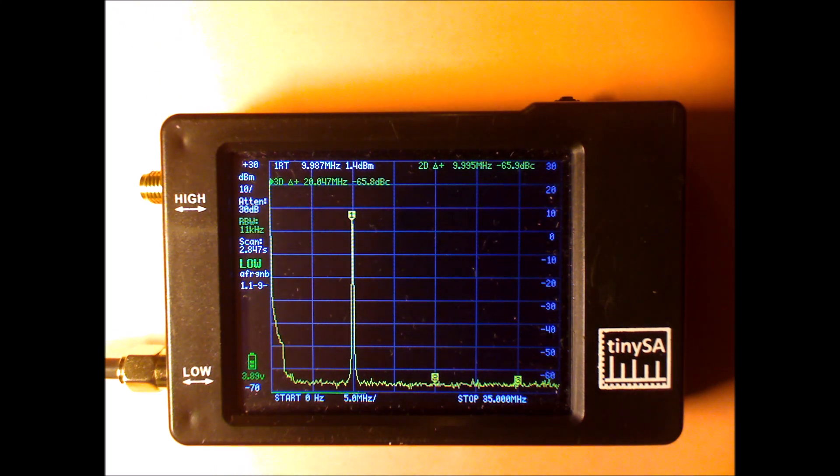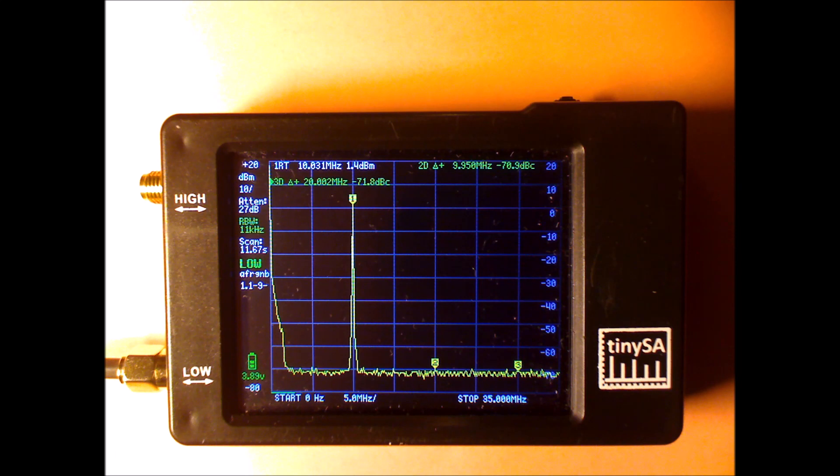You see the sweeping again becomes slower. And we are now at the noise floor at minus 69 dBc, minus 70 dBc. And still no sign of harmonics.